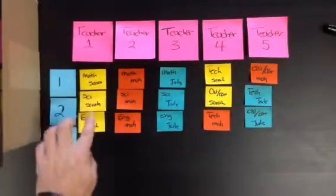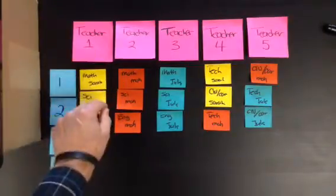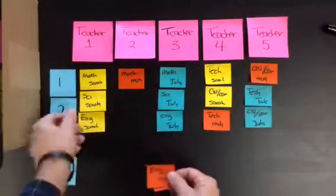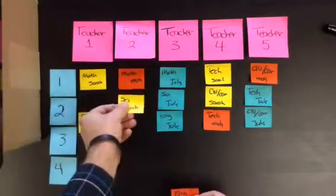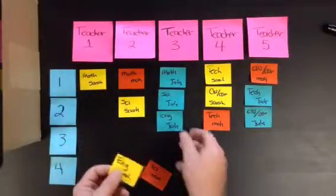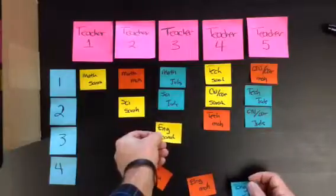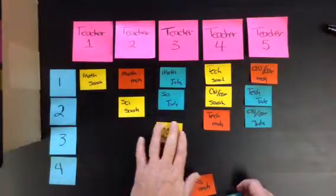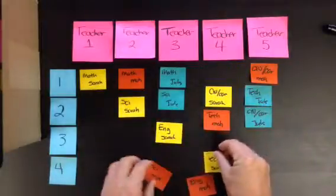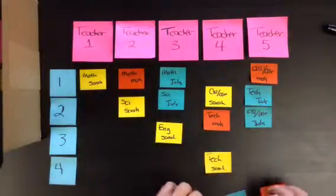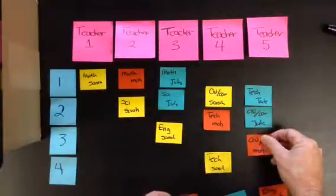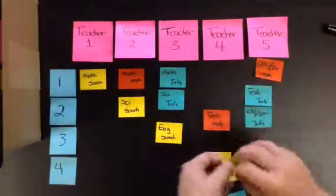Sarah starts with the math teacher in period one, and then moves to science in period two, English period three, tech period four, and then she does the civics and careers in this float period. That's Sarah, so that's the yellow.